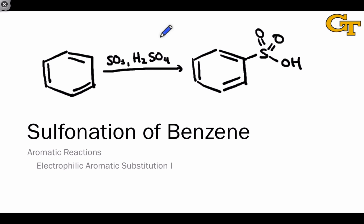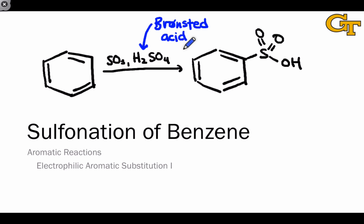Looking at the reaction conditions, we can recognize the presence of a strong Brønsted acid in the form of H2SO4. I point this out to emphasize the connection between the Lewis acid we saw in the last video on halogenation and the Brønsted acid shown here. Both of these reagents have the purpose of creating an extremely strong electrophile — an extremely strong Lewis acid — that can engage with the benzene ring. What we'll see in creation of the active electrophile is a transformation of the Brønsted acidity of H2SO4, its desire to donate a proton, into Lewis acidity in the active electrophile, which is protonated SO3, or HSO3+.